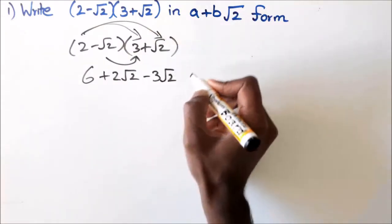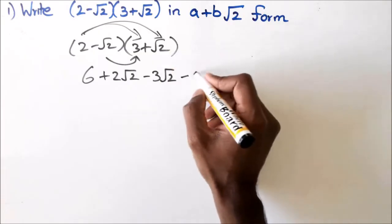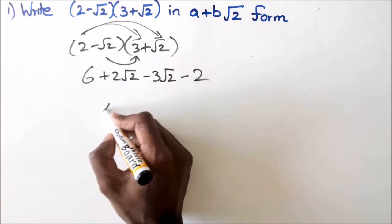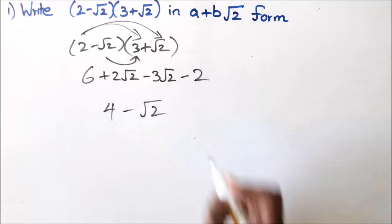Then minus and plus is negative, and √2 times √2 is 2. So for the first answer you should have got 4 minus √2. Happy with that? Cool, I'll get the second question up.